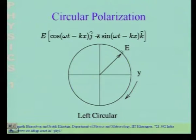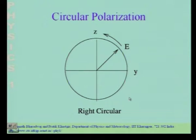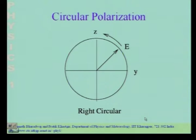This kind of electromagnetic wave, where the electric field at any fixed position goes around in a circle, is said to be circularly polarized. It could go around in two different ways depending on the phase: if there is an extra phase of π/2 along z, it goes around as left circularly polarized; if there is a phase lag of π/2 along z, it goes in the opposite direction, which we refer to as right circularly polarized light. So electromagnetic radiation can be circularly polarized.